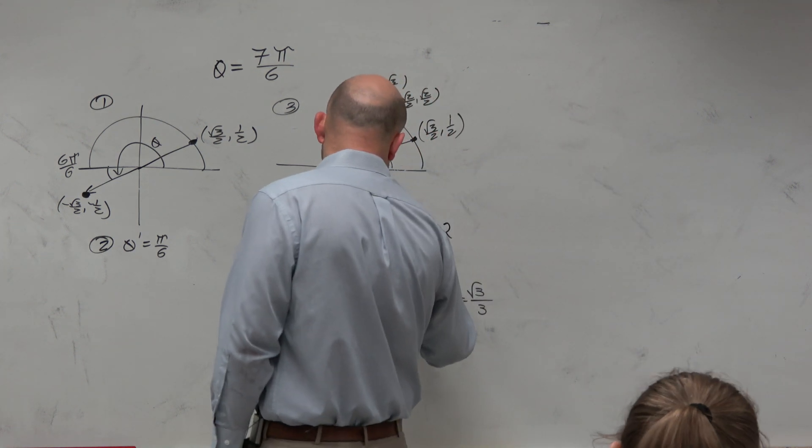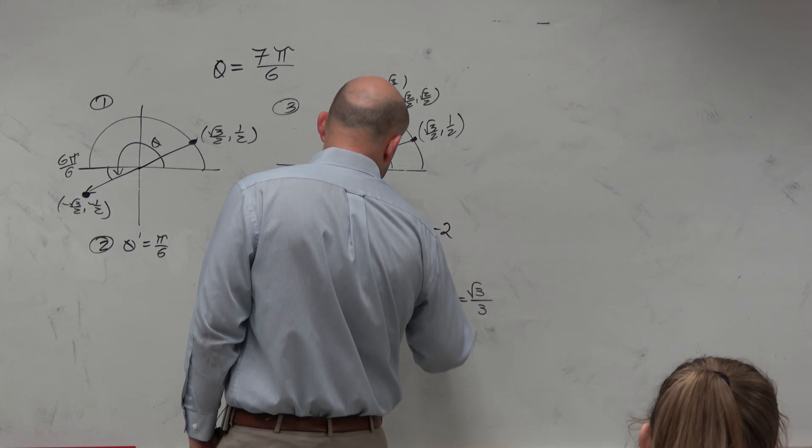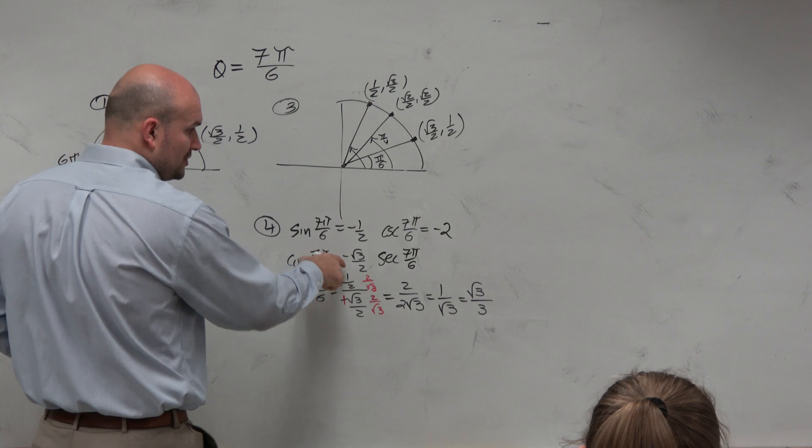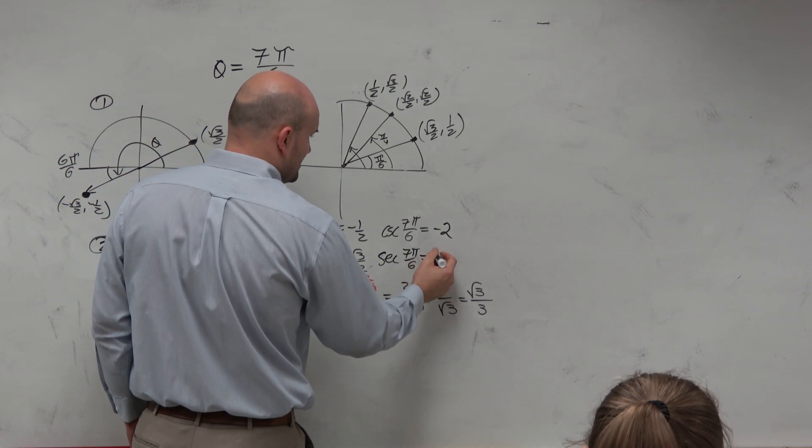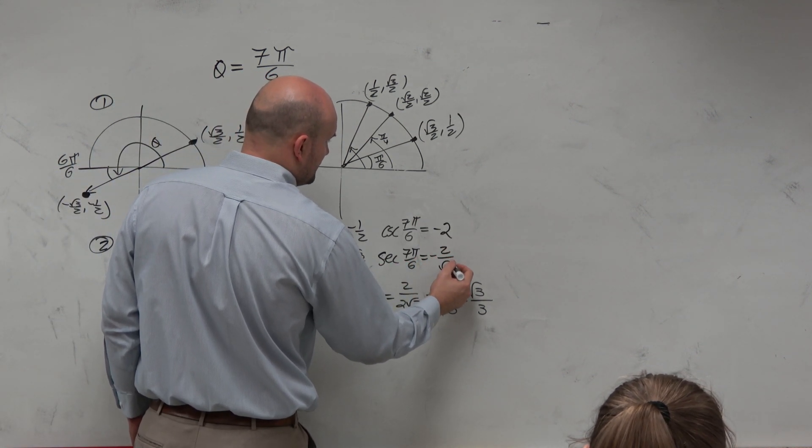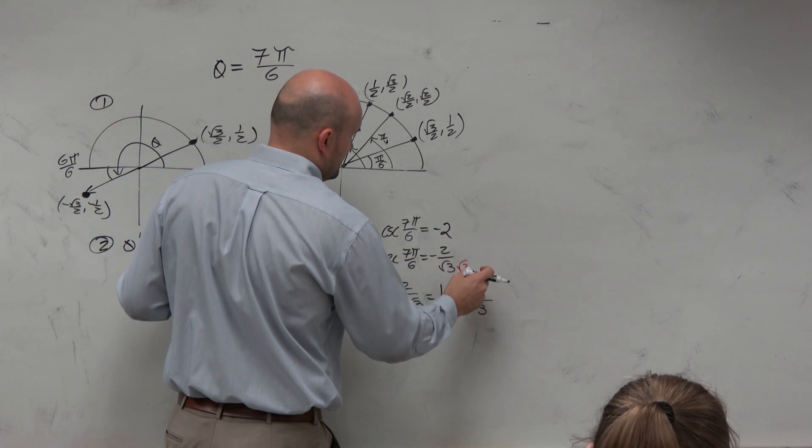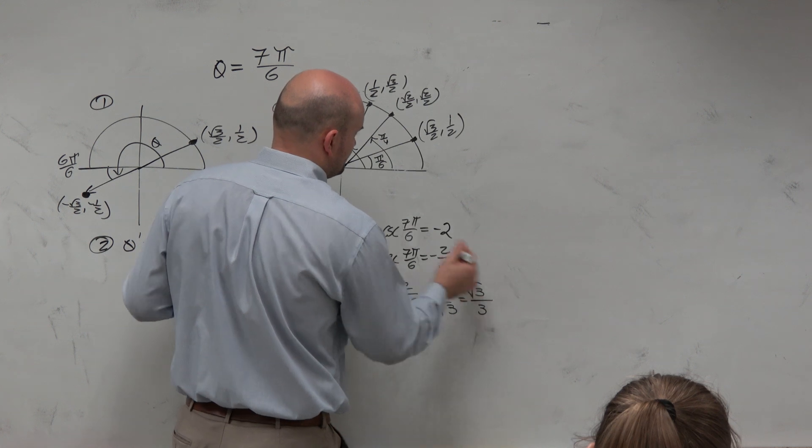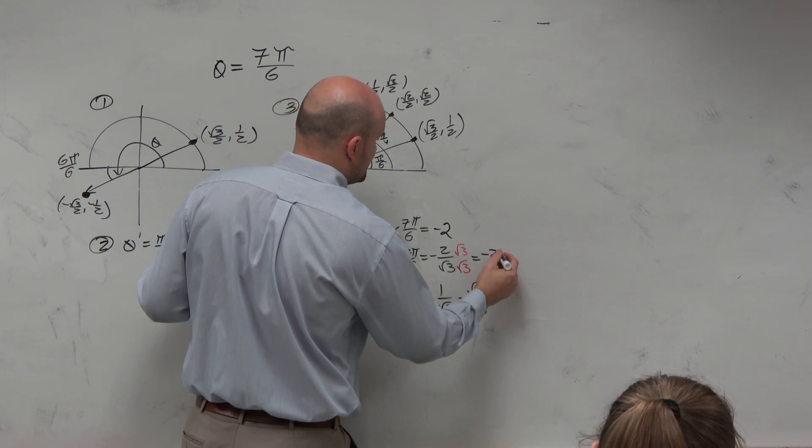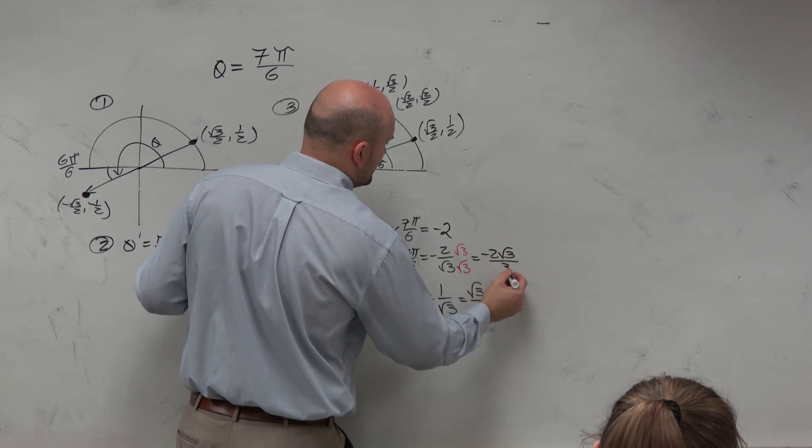The secant of 7 pi over 6 is the reciprocal of this. So that's going to be a negative 2 over radical 3. Again, you can rationalize the denominator and you get negative 2 square root of 3 over 3.